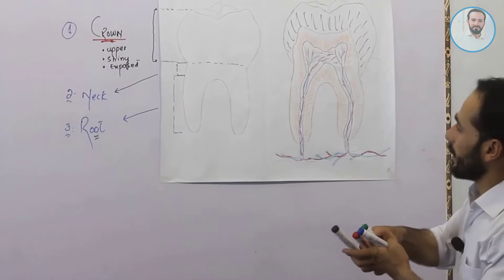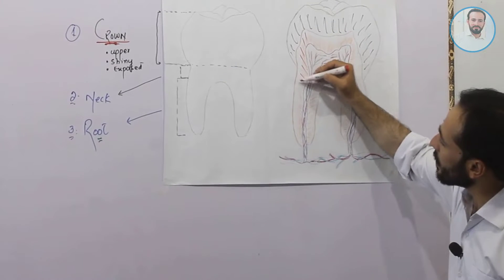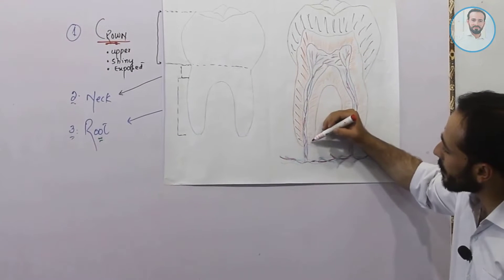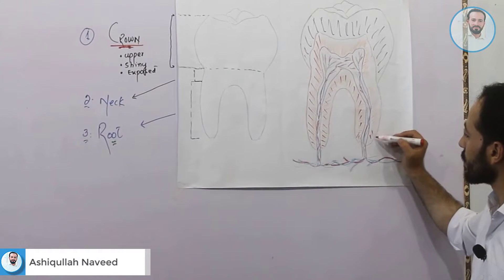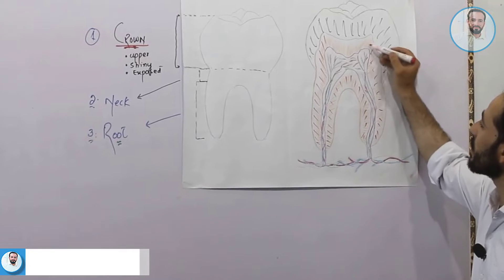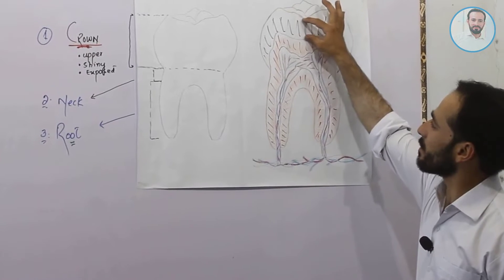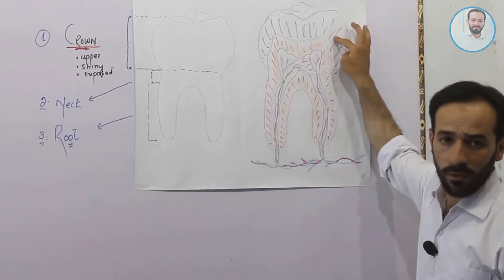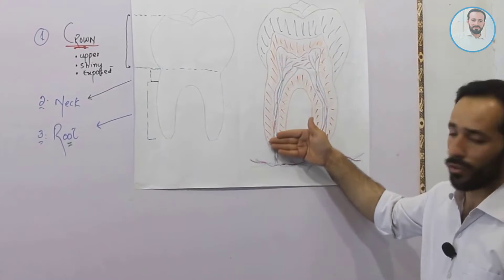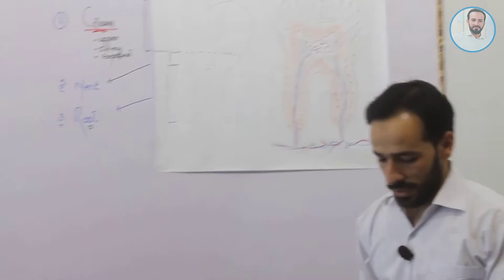The part of the tooth which is below the enamel — the part which extends down to the root and surrounds the pulp of the tooth — this part is called the dentine. Dentine is the part of the tooth which lies next to enamel, and it goes down towards the root and surrounds the pulp of the tooth.